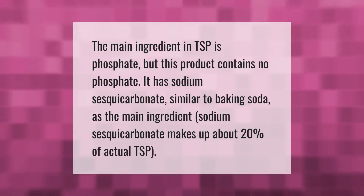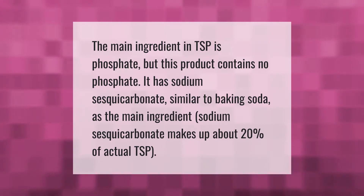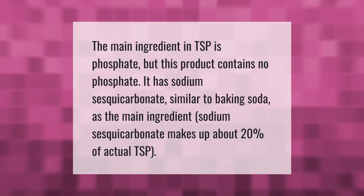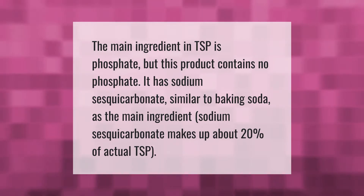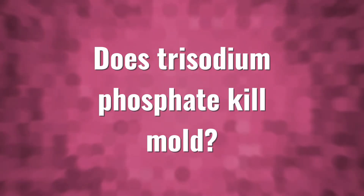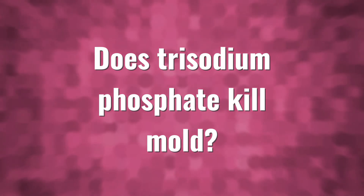The main ingredient in TSP is phosphate, but this product contains no phosphate. It has sodium sesquicarbonate, similar to baking soda, as the main ingredient. Sodium sesquicarbonate makes up about 20 percent of actual TSP.